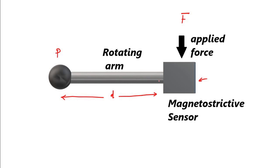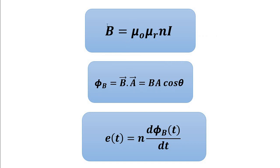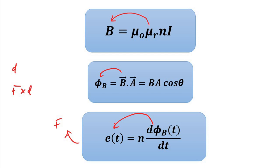Force is applied on the sensor. With the application of force, the material is stressed, causing a change in relative permeability. The change in relative permeability causes a change in flux density, which in turn causes a change in magnetic flux. The change in magnetic flux causes a change in EMF. This change in EMF is a measure of the force. We know the fixed distance D, so we multiply to obtain the torque.